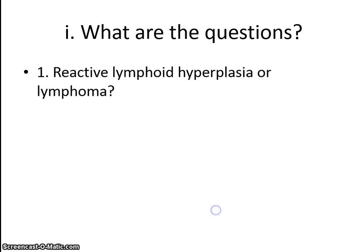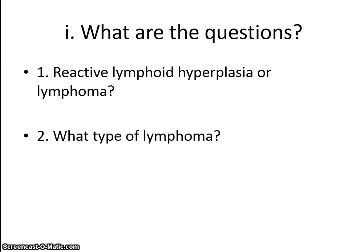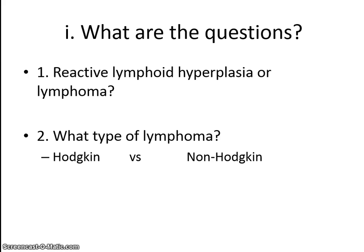So what are the questions? The most important question is, are we dealing with a reactive lymphoid hyperplasia or a neoplastic one, which is a lymphoma? And the second question is, once we decide that it's a lymphoma, we then need to type the lymphoma. The most useful classification is Hodgkin versus non-Hodgkin lymphomas.